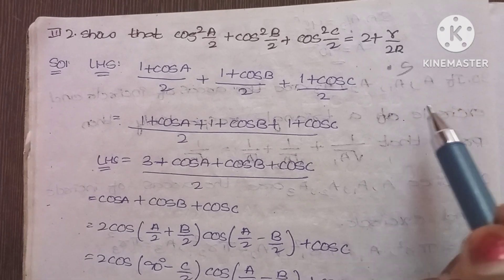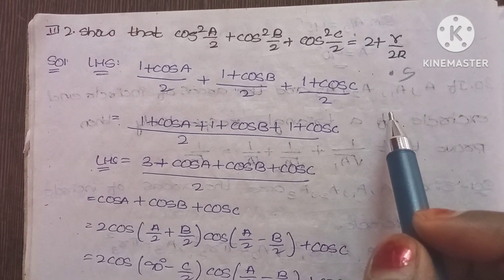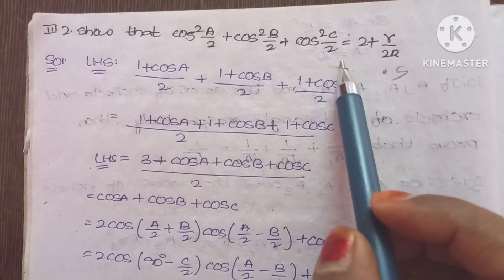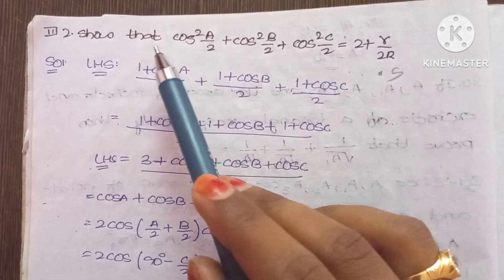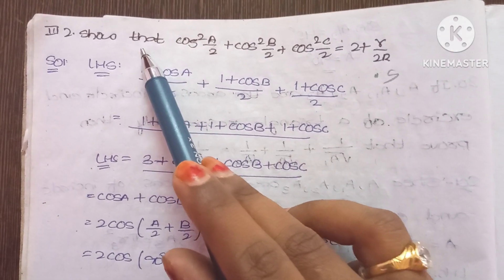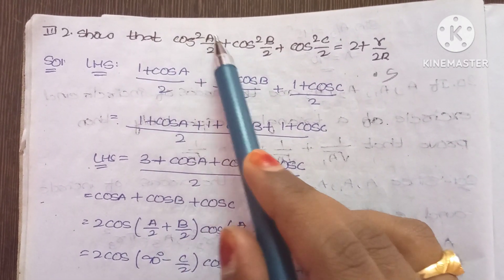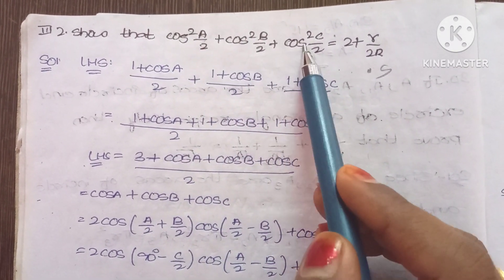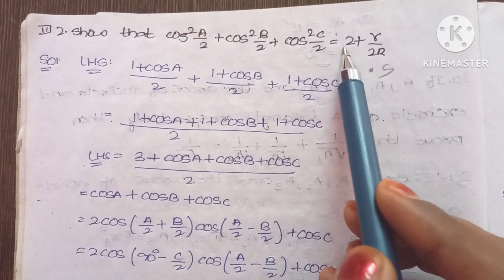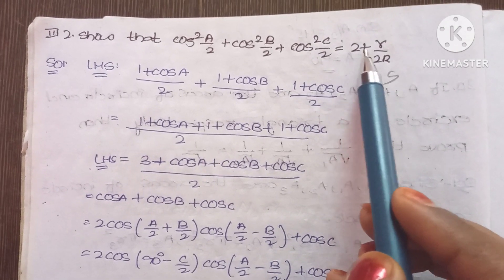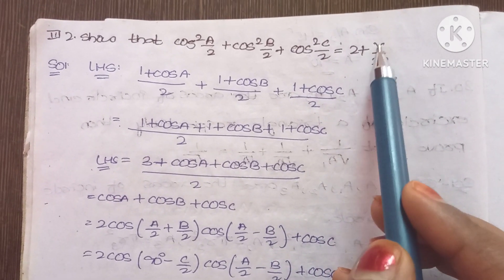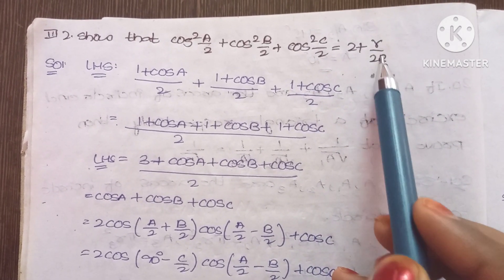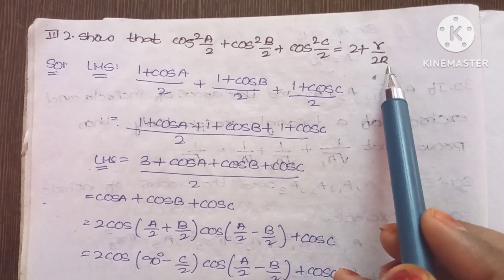Hi all, this is a topic of properties of triangle. We have some problems. The first problem asks us to show that cos²(A/2) + cos²(B/2) + cos²(C/2) is equal to 2 + r/(2R).